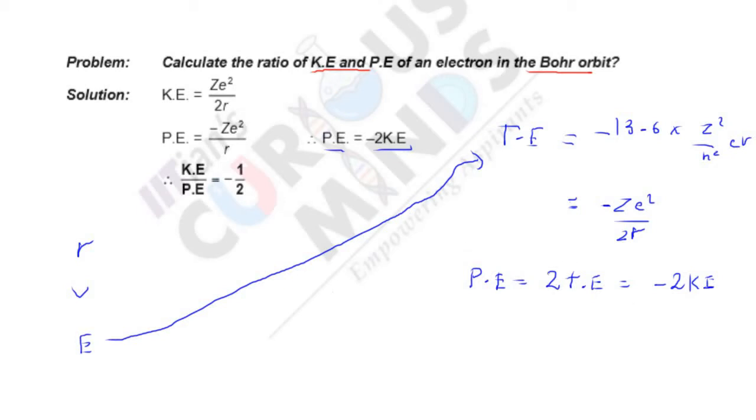It is nothing but minus 2K. So if you see, you always know, total energy is nothing but PE plus KE. So PE is nothing but minus 2K. So you say minus 2K plus KE, so it is minus K.